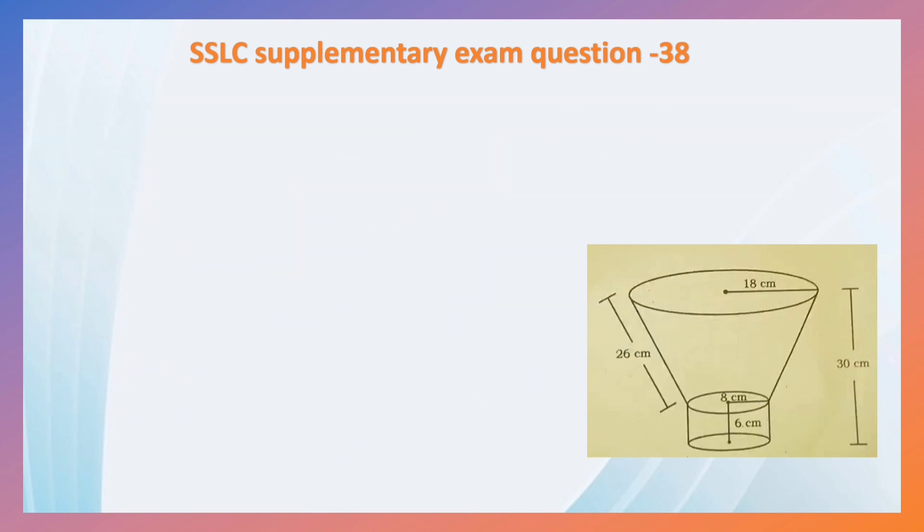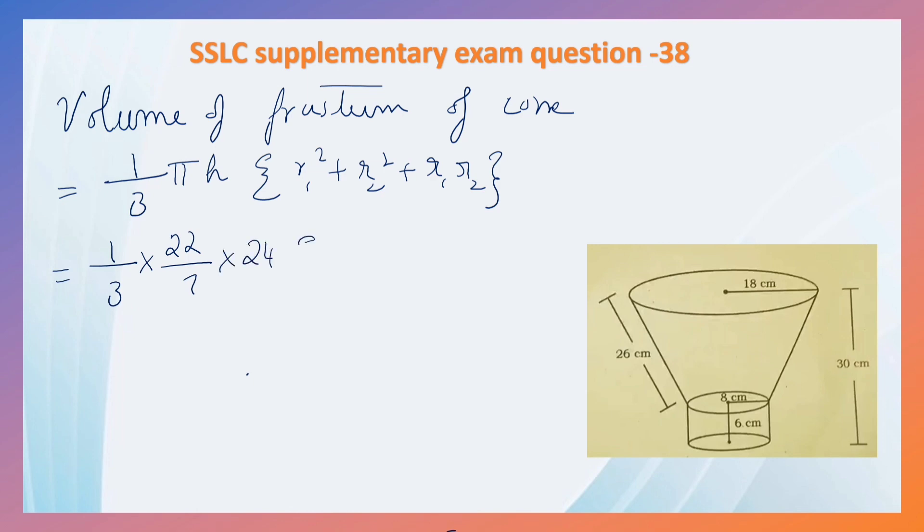Let us calculate volume of the frustum of the cone. Formula is one-third pi H, R1 square plus R2 square plus R1 into R2. Pi is 22 by 7, height H is 24 cm.